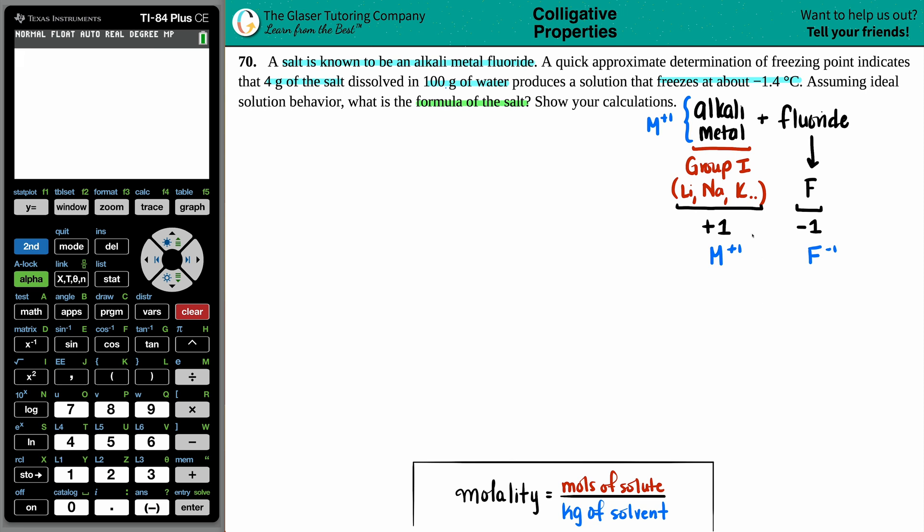So when these come together, M, which is a plus 1, comes together with F, which is a minus 1. You could use your crisscrossing to bring those charges down to say I needed one of the metal and one of the fluorine. But basically, the formula is going to be something like this, MF. It could be LiF if I substitute in the lithium for the metal. It could have been NaF, could be KF, or any other alkali metal that's in group 1.